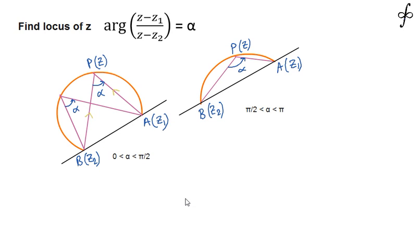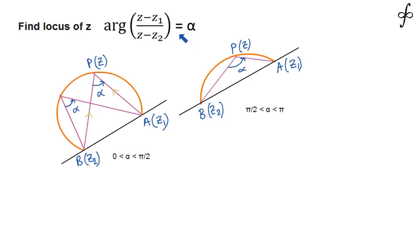Another locus problem for complex numbers is a very interesting one. The condition says that argument of (z - z1) divided by (z - z2) is equal to alpha. For this particular illustration, I have taken alpha to be a positive angle, so alpha can lie between 0 to pi.